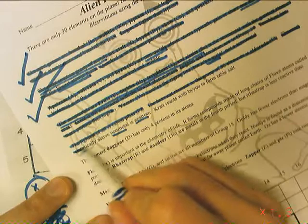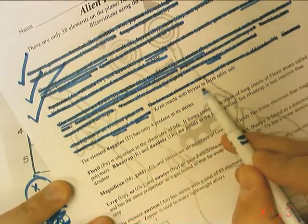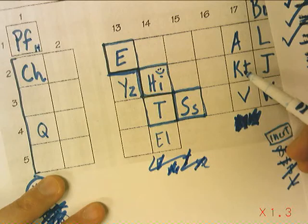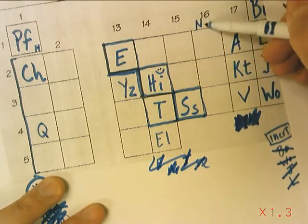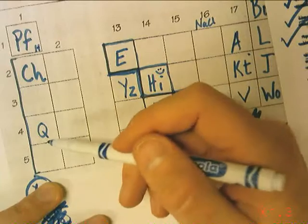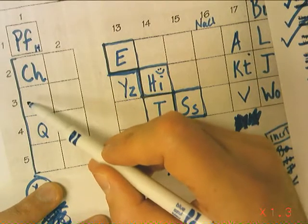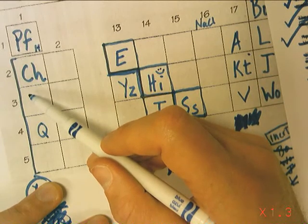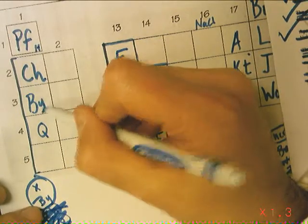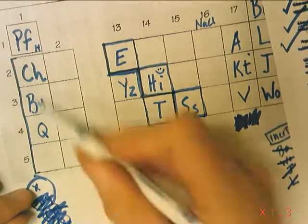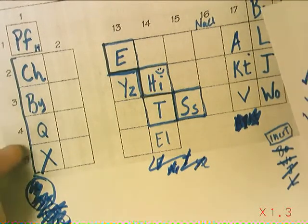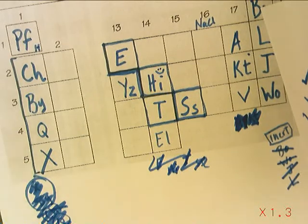KRATT reacts with BU to form table salt. KRATT is already in there. I know that table salt is sodium chloride. I know that this one is chlorine. So sodium is over here somewhere. I think sodium is in this spot. So that must be BU. The symbol for BU was given earlier as BY. That means that X must be that one. So it is possible to figure out where some of these go without even learning anything about them through process of elimination.